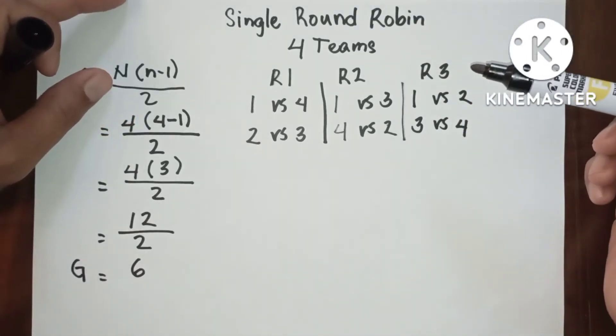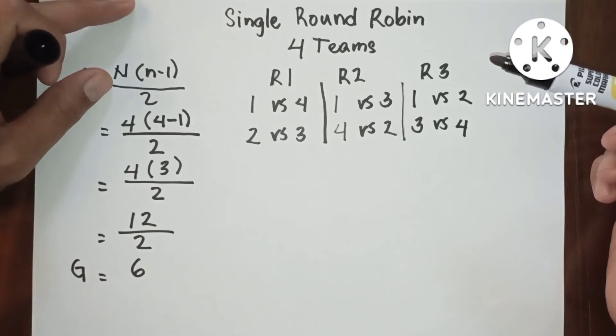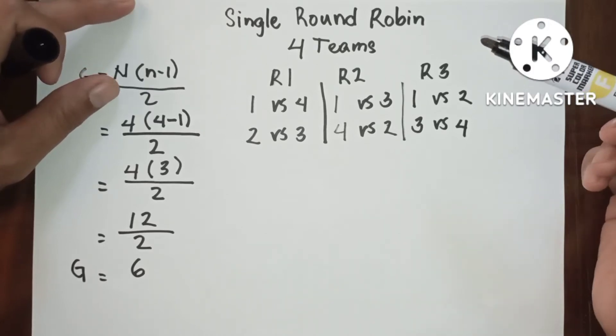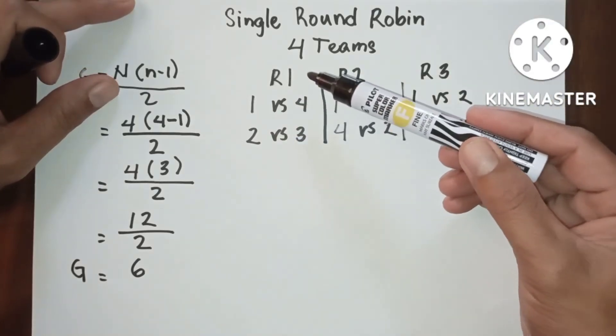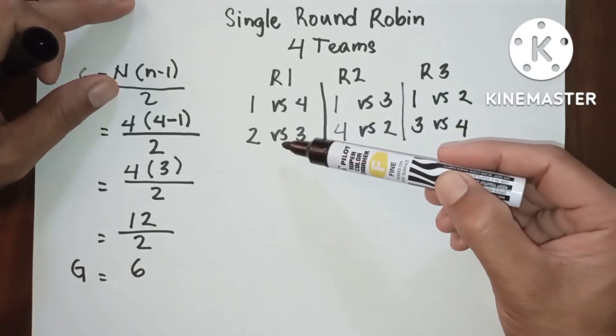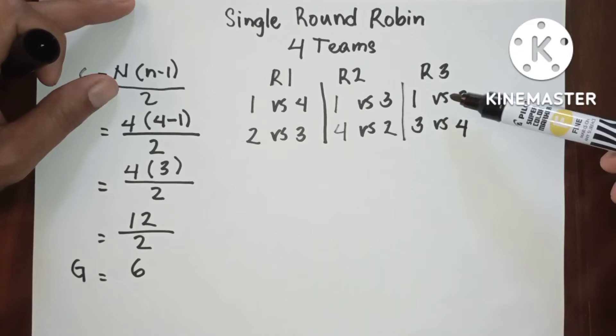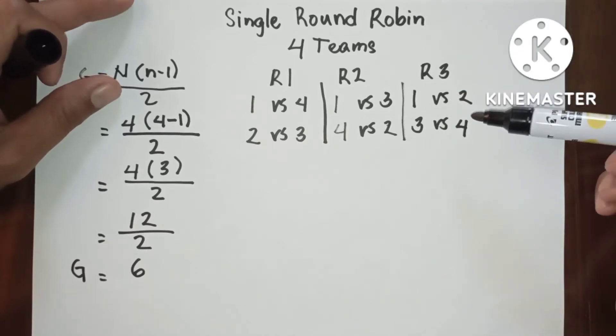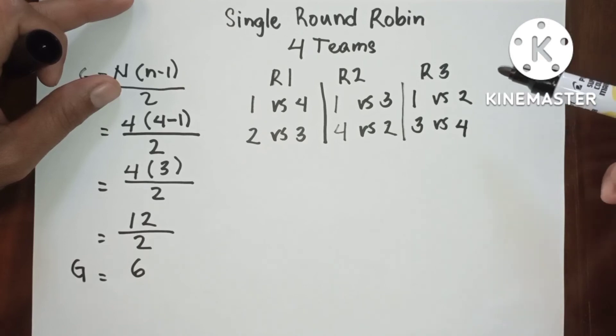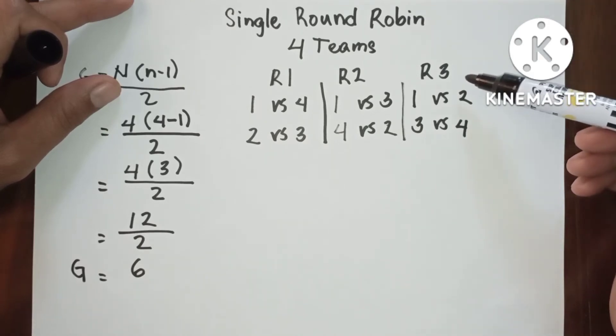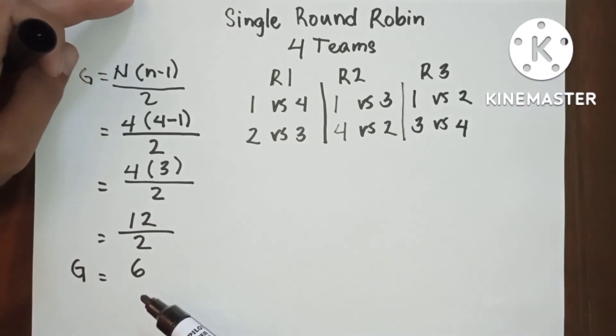So let's check how many games do we have in three rounds. In first round we have one, two. Second round three, four, and five and six. So meaning we are now finished in round three since we only have six games.